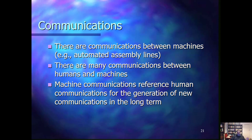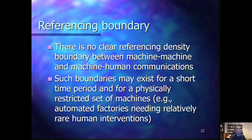There are also many human-machine communications where human intervention is needed. Partly these are communications that lead to the production of machines through human communications, but also these are interventions when humans need to intervene to change how the machine behaves or fix the machine when it is not behaving correctly. Machine communications reference direct human communications for the generation of new communications. There is much less clear referencing boundary — there are many machine-machine and machine-human communications, but relatively few compared to other human communications. When these boundaries exist, they are existing for a relatively short period or in a very restrictive manner.